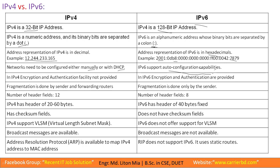IPv6 has automatic configuration capabilities, which is one of the most important features. IPv6 supports auto-configuration, whereas IPv4 also has auto-configuration support but differs in implementation. IPv6 also allows authentication facilities, and provides better security integration compared to IPv4.